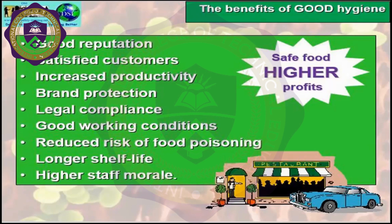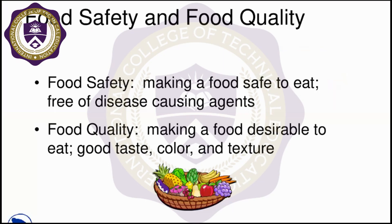There is a difference between food safety and food quality. Food safety is about making food safe to eat — free of disease-causing agents. Food quality, on the other hand, relates to characteristics such as taste, color, and texture. Taste is essentially what defines food quality.